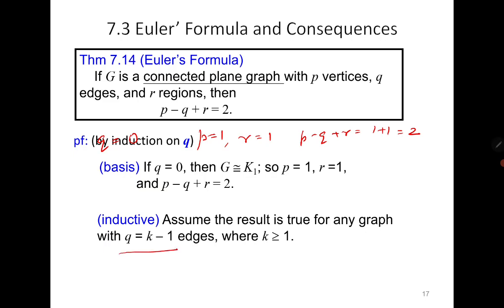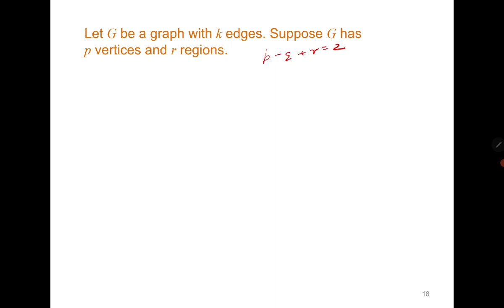Assume the result holds for q equals k minus 1. We must show it holds for any graph with k edges. A common mistake is trying to build from k minus 1 edges to k edges — that is not the correct approach. Instead, assume any graph with k edges and show p minus q plus r equals 2. Think about it the other way: given a graph G with k edges, delete an edge to get a graph with k minus 1 edges. But we must be careful which edge to delete, since deleting an edge might disconnect the graph.